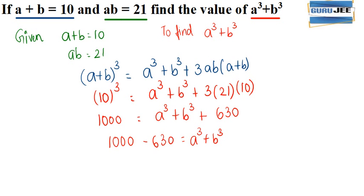Therefore we got our a cube plus b cube as 370. So with the given a plus b and ab we have found the value of a cube plus b cube as 370.